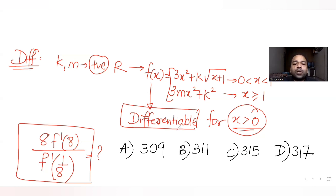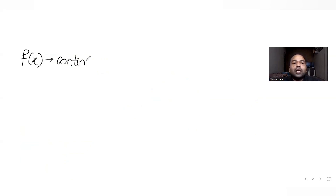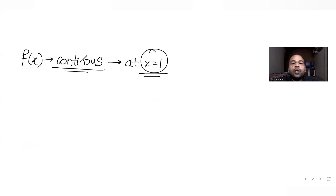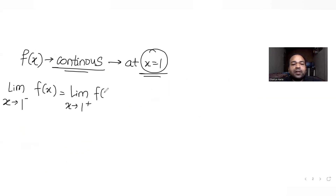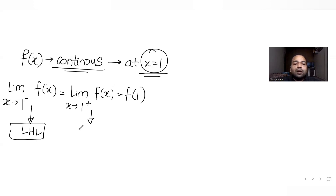Let's first understand the approach. Since f of x is differentiable for x greater than 0, it must also be continuous. At x equal to 1, using continuity, the left hand limit as x tends to 1 minus equals the right hand limit as x tends to 1 plus, and both equal f of 1. The left hand limit applies for x less than 1, and the right hand limit for x greater than 1.